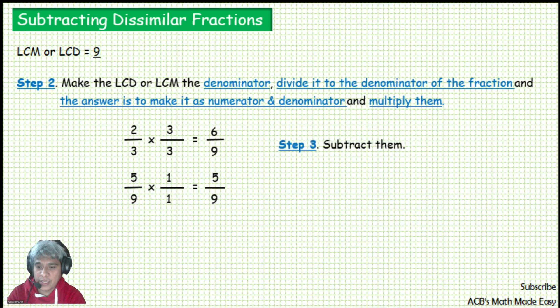You can now subtract the fractions. 6 over 9 minus 5 over 9 is equal to 1 over 9. Our final answer is 1 over 9.